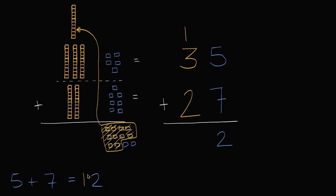And all we did is we wrote the one in the tens place — that's why it kind of looks like you are carrying it. But you're just writing this in the tens place. All we did is we said we have five, we have seven, that would be twelve. We can't write twelve in the ones place, so let's take ten of those twelve and regroup them as a ten, and then we have the two left over. Five plus seven is twelve — one, two. And now we can add the tens place. We have one ten plus three tens plus two tens.